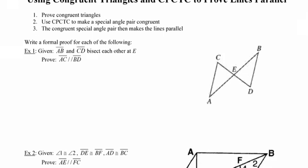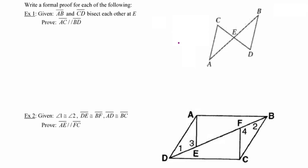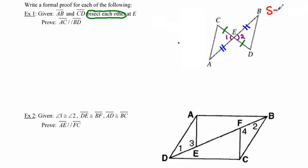In number one, we're given that segments AB and CD bisect each other at point E. AB splits CD into two equal parts — sides CE and ED — and at the same time CD also splits segment AB into two equal parts: AE and EB. Beyond the given information, I also know that the two vertical angles at point E are going to be congruent, so it's going to be a relatively simple matter to make these triangles congruent by side-angle-side.